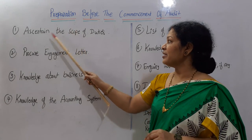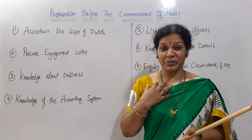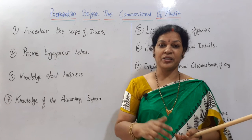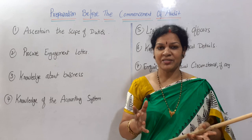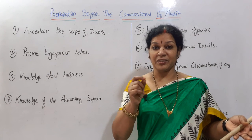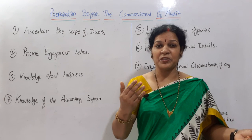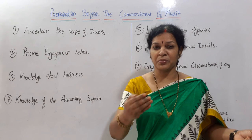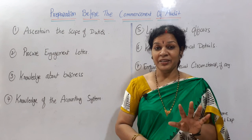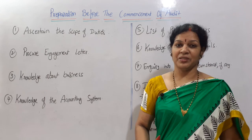The first step is to ascertain the scope of duties. The auditor has to decide very clearly what his duties are, what work he is supposed to do. If he has this kind of clarity, then he can go ahead according to the wishes of the client. There are different types of auditing, and the client may have special instructions or expectations. The auditor must confirm all these duties to have clarity about the auditing work.